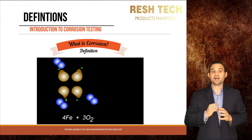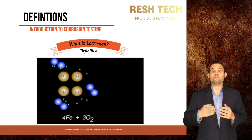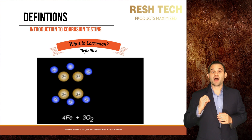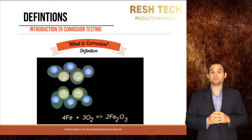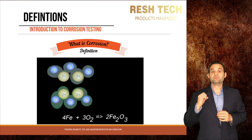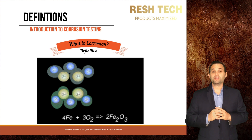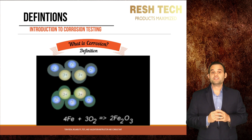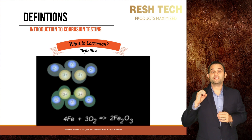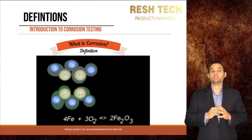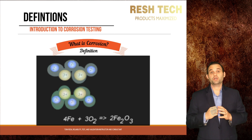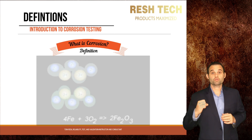The classic example of the electrochemical reaction is between iron and oxygen. In the reaction, oxygen molecules accept electrons from the iron, and the oxidative reaction causes the iron to convert to iron oxide — or in household terms, rust.